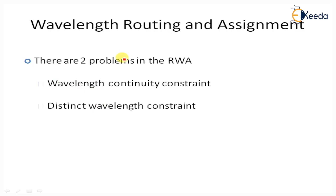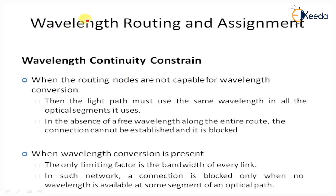The first problem is the wavelength continuity constraint and the second is the distinct wavelength constraint. In the absence of wavelength conversion, it is required that the light path occupy the same wavelength on all fiber links it uses. This requirement is referred to as the wavelength continuity constraint. The RWA problem is critically important in increasing the efficiency of wavelength-routed optical networks. When routing nodes are not capable of wavelength conversion, the light path must use the same wavelength in all optical segments.